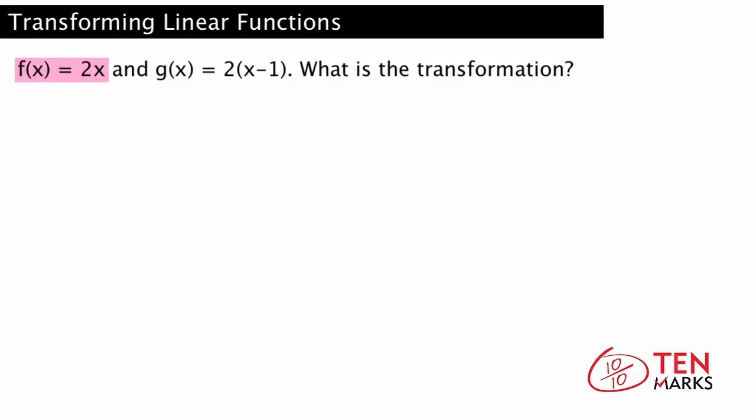If f equals 2x and g equals 2 times x minus 1, what's the transformation?